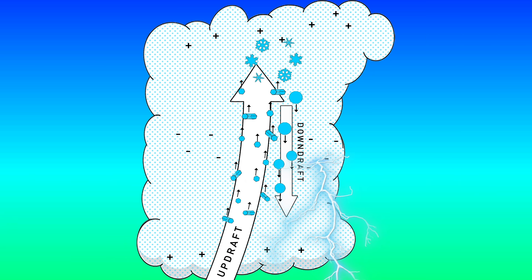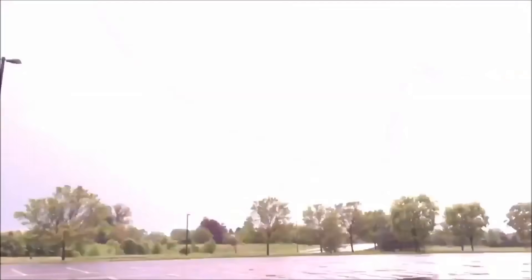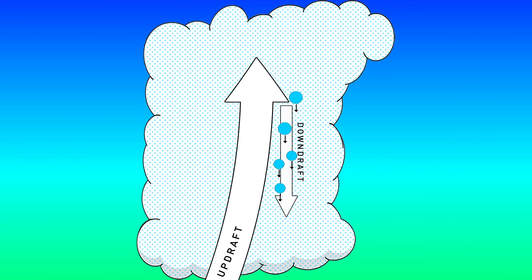In a normal thunderstorm, that tends to be the extent of it. The cloud produces lightning from the ice crystals and snow pellets bumping together, and the snow pellets melt into raindrops before they reach the ground. In a particularly intense thunderstorm though, where stronger updrafts are able to catch the falling snow pellets and keep them aloft inside the cloud, it starts the process of producing hail.